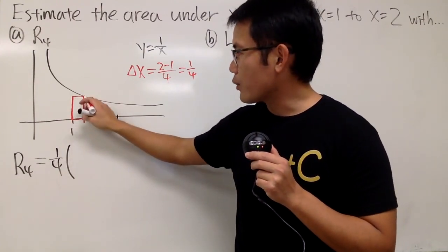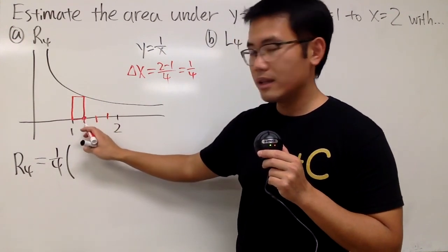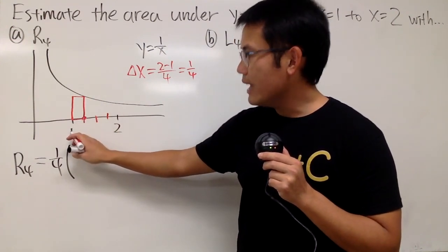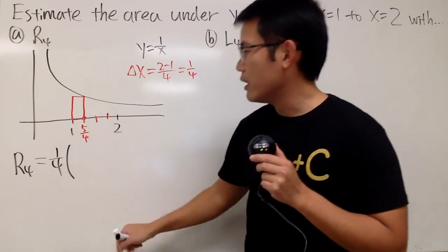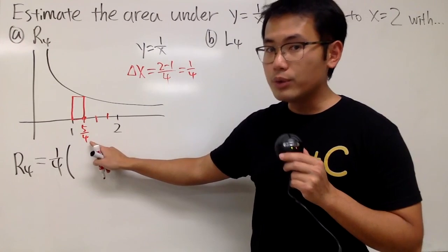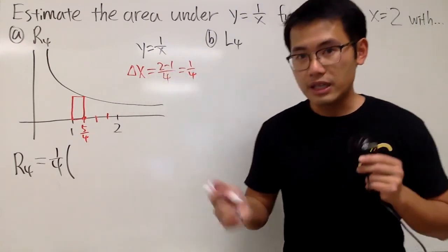So we need to figure out this y value when x is what? From 1, and then we have to add 1 over 4, which is 5 over 4. That's the x value that we have to use, and then put it right here so we can get the y value.